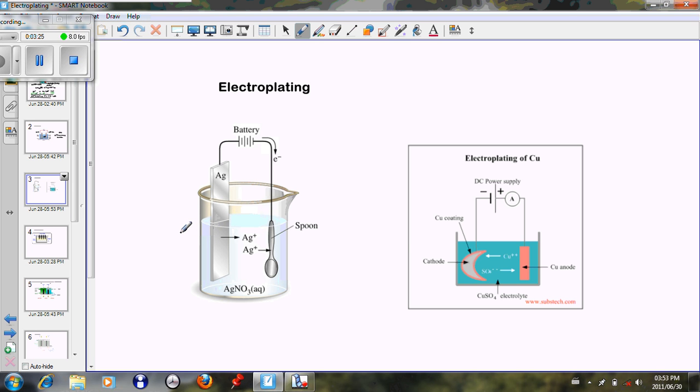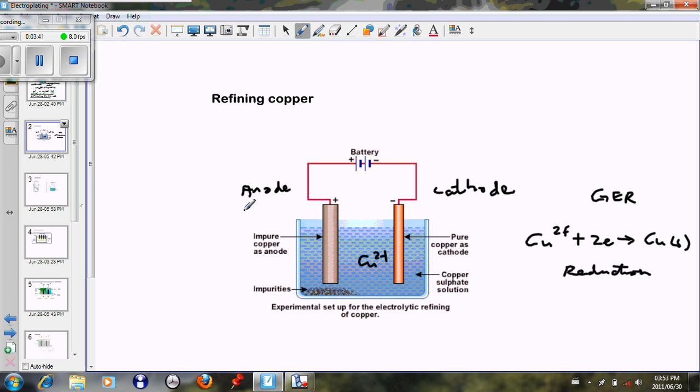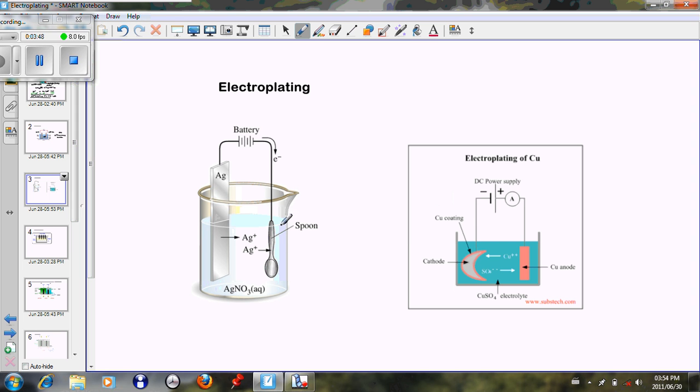Another example of where electrolysis is used is in electroplating. If you look at this particular case here, we have a silver electrode and we have a spoon. If you want to coat the spoon with silver, as we looked in the last example, we see that at the cathode we place the substance that wants to be plated. The substance that wants to be plated must be placed at the cathode—always, that's the case.